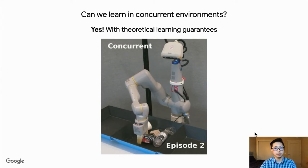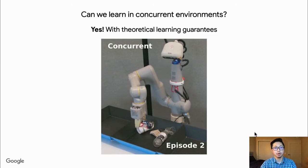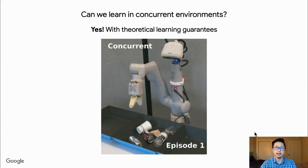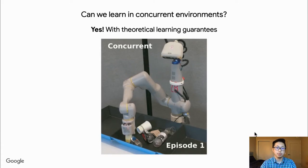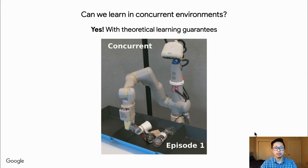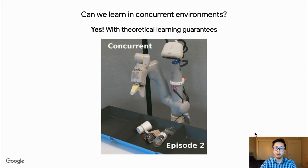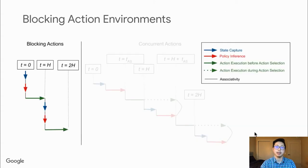So can we learn in concurrent environments? In this work, we show that in fact, the answer is yes. We show that when we apply our methods to real world robots, we can learn policies that are fast and smooth. We'll return to real world results shown here in a moment. But first, let's dive deeper into the differences between blocking and concurrent environments.